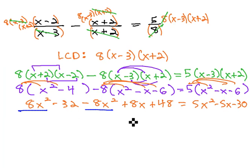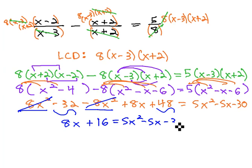When we combine like terms, the 8x² and 8x² subtract out to 0. Then we've got -32 and 48. So it's going to be 8x + 16 = 5x² - 5x - 30.